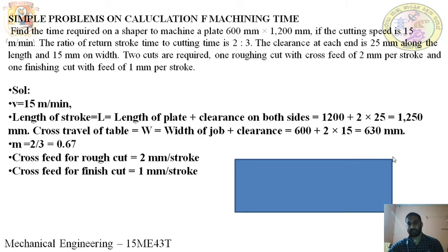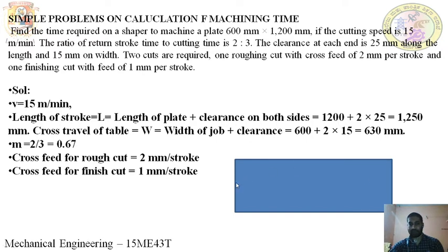So if the length of the job is 1200 mm, the tool must start 25 mm before the workpiece and overrun 25 mm after the end. For the width of 600 mm, a clearance of 15 mm is taken on each side. The total length of stroke is therefore 1200 plus 50 = 1250 mm, and the total width including clearance is 600 plus 30 = 630 mm.